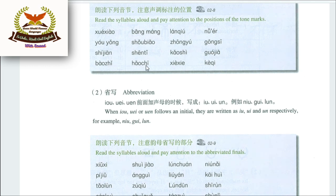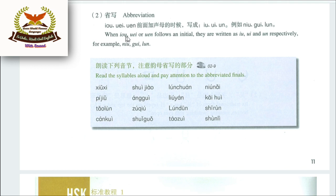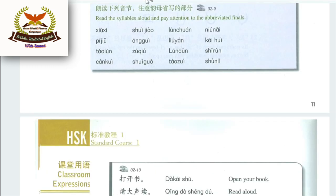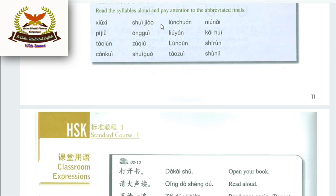Abbreviation rules: When I, O, U and Ü, E, I or Ü, E, N follow an initial, they are written as U, V, N respectively. For example: nü, gui, and lün.